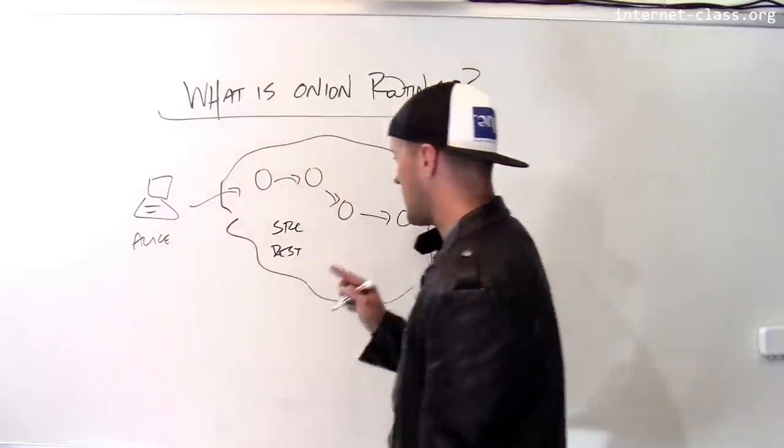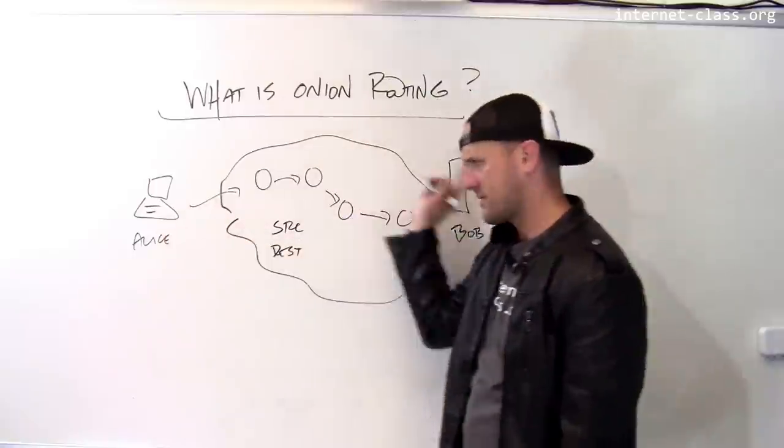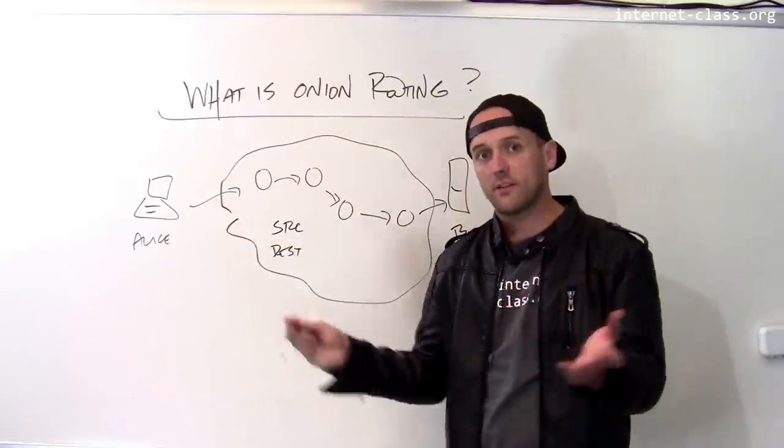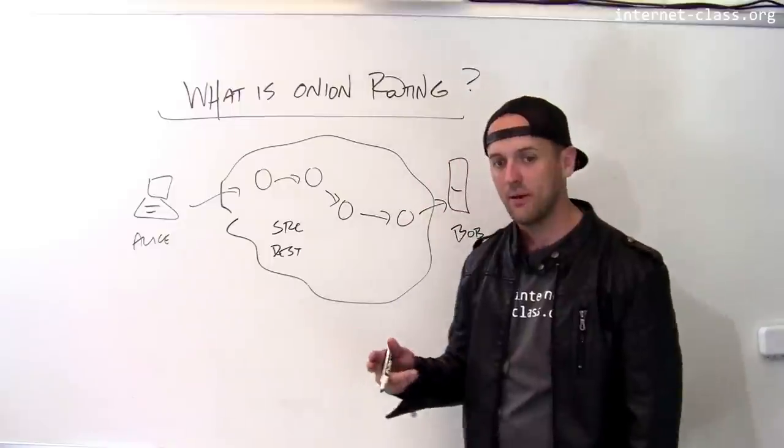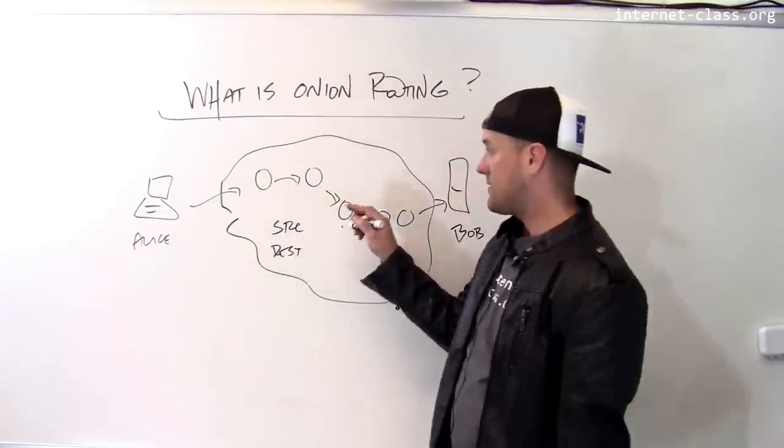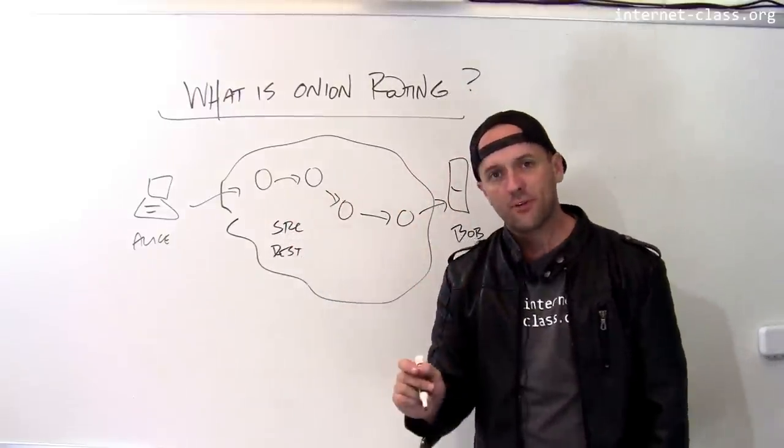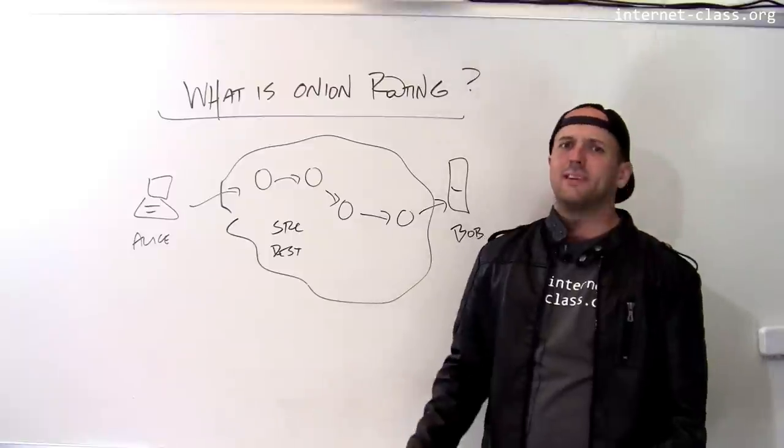If someone is trying to determine whether Alice is talking to Bob or who Alice is talking to, all they have to do is get access to one of these routers. And of course you might say, well, that sounds ridiculous. How do you get access to a router?